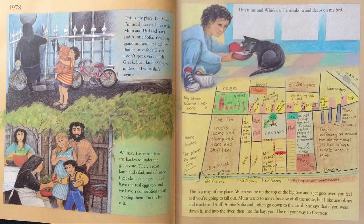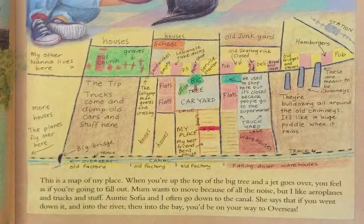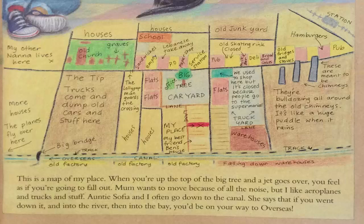This is me and Whiskers. He sneaks in and sleeps on my bed. This is a map of my place. When you're up the top of the big tree and a jet goes over, you feel as if you're going to fall out. Mum wants to move because of all the noise, but I like aeroplanes and trucks and stuff. Aunty Sophia and I often go down to the canal. She says that if you went down it and into the river, then into the bay, you'd be on your way to overseas.